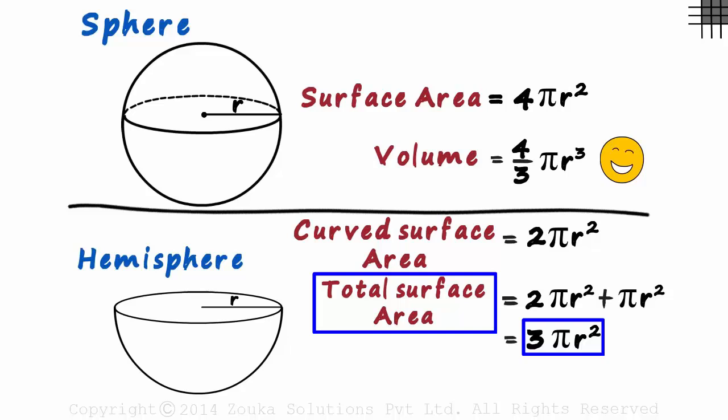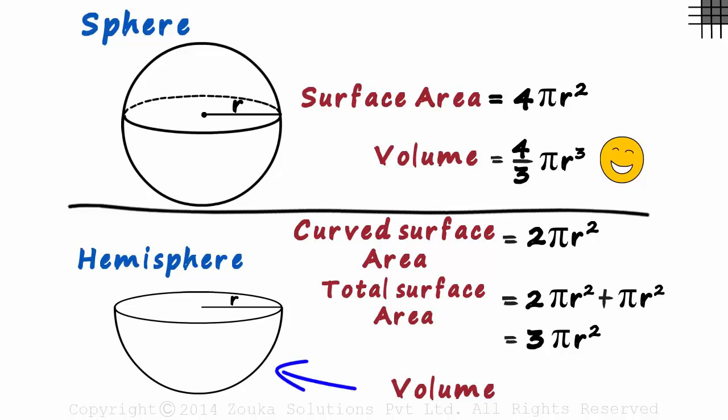What about its volume? Again, the volume of the hemisphere will be exactly half that of the volume of the sphere. Dividing this by 2, we get 2/3 πr³.